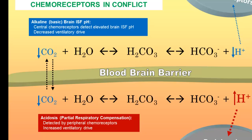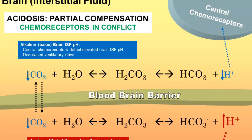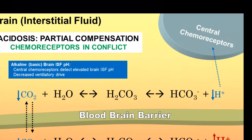This is going to also cause, by mass action, a leftward shift in the parallel reaction within the brain ISF, leading to an abnormally high brain pH. The increase in the brain pH, that is, the decrease in the proton concentration, will be sensed by the central chemoreceptors, and as a result, they are going to want to limit the increased ventilation driven by the peripheral chemoreceptors.